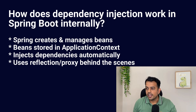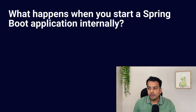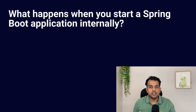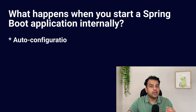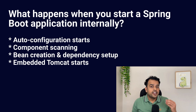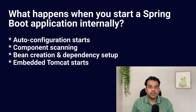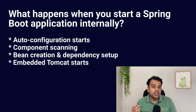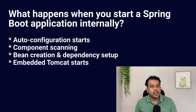The next question is: what happens when you start a Spring Boot application internally? When you run the main class, the SpringApplication.run method starts everything. It triggers auto configuration, scans the packages, creates the beans and sets up dependencies. Then it loads your config and finally starts the embedded Tomcat server.